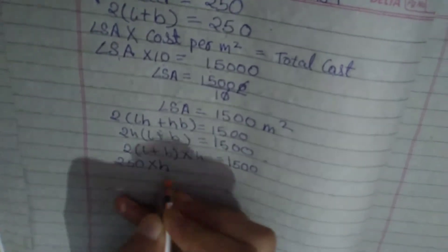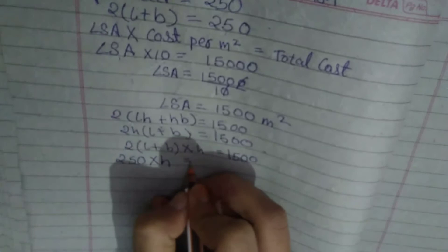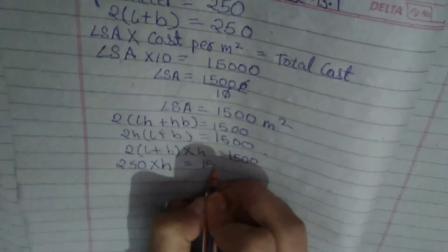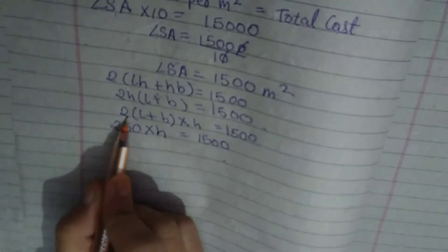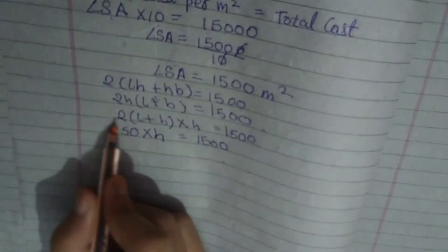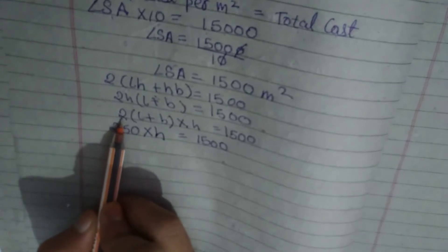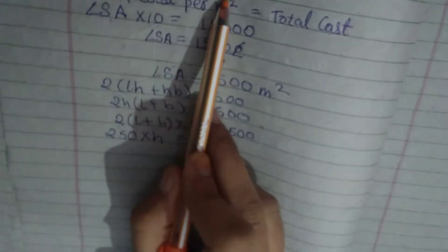250 into H is equal to 1500. As we know, 2 into L plus B is the rectangular perimeter, we have already got 250. Instead of putting 2L plus B, we can directly put 250 into height.